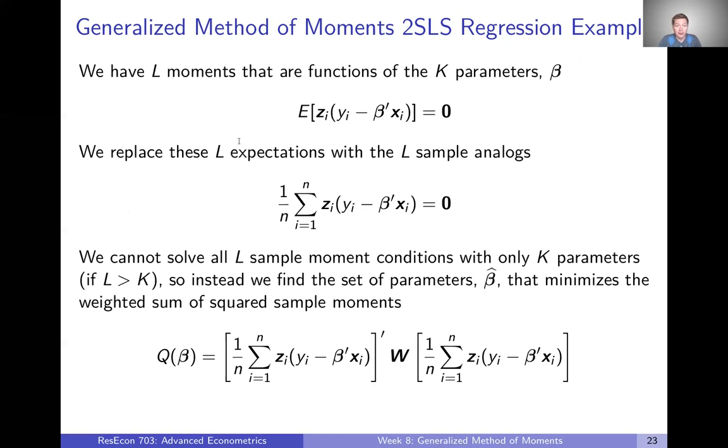So once again, we can take those population expectations and replace them with sample averages. So now we have the sample average of instrument times econometric residual. And we want that to equal zero. Every one of those to equal zero, because there are L instruments. So we're going to have, this is a system of L equations. But we only have K unknown parameters. If L is greater than K, we cannot solve this system of L equations for K parameters.